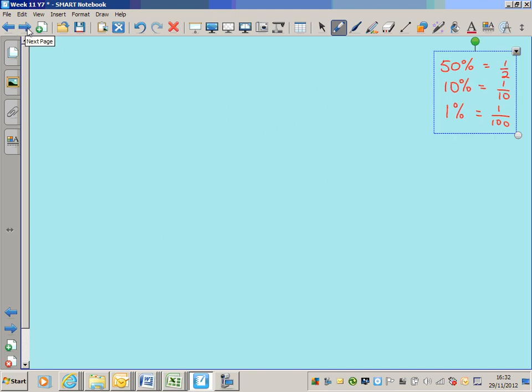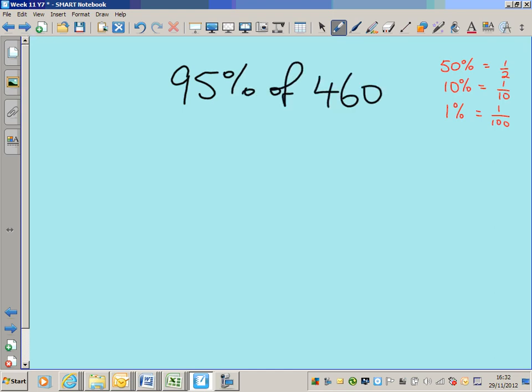One more example for you before you do your prep. 95% of 460. 95%, now listen. You could find 50%, and you could find 10% and times that by 4, and then you could find 5%, and you could add all those together to make 95%.